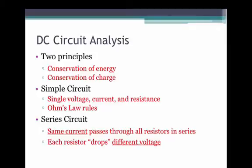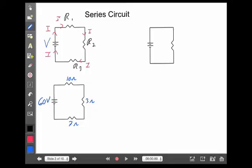The second principle of a series circuit is that each resistor may drop different voltage. They each use or need a different amount of energy in order to run. So the voltage may not be the same on each resistor as it uses its energy along the way. Because remember, we've got to use up all that voltage. So whatever voltage you have is divided up among those resistors.